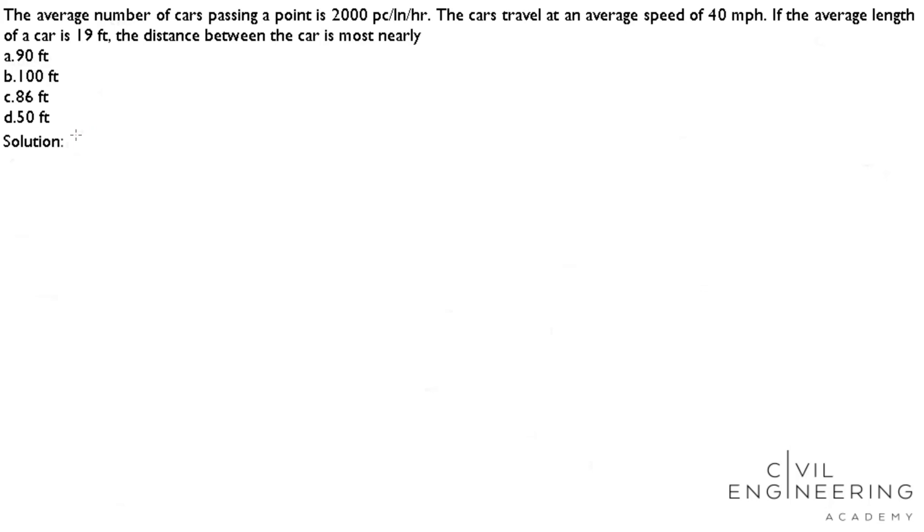First we have to calculate density k. k equals q divided by u_s. So our q is 2000 passenger cars per lane per hour divided by our speed 40 miles per hour. After calculation I get the value 50 passenger cars per lane per mile.